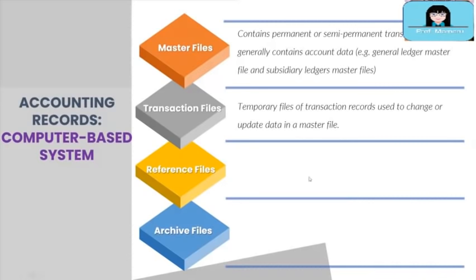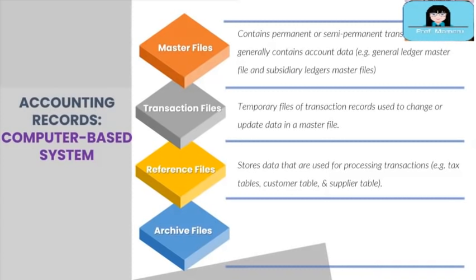Next we have reference files, which store data used for processing transactions. These files serve as reference data in the computer system. For example, income tax tables: when a payroll clerk processes payroll on the computer software, he or she does not need to manually refer to the income tax table, because the software has a built-in income tax table. The software automatically checks the built-in tax table and calculates the amount of tax based on payroll data such as gross salary and other deductions on the computer screen.